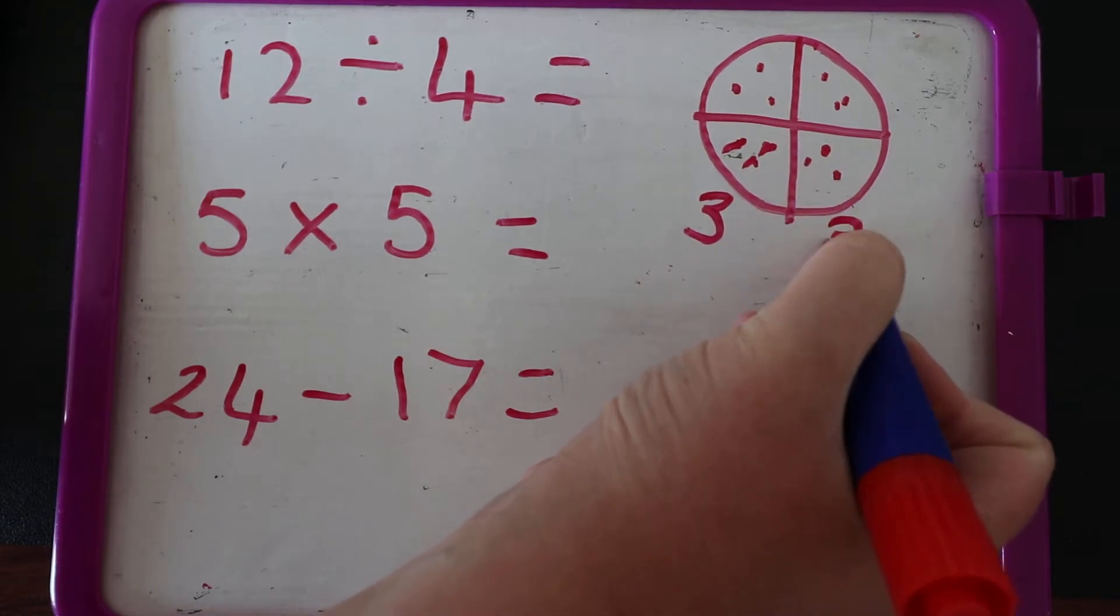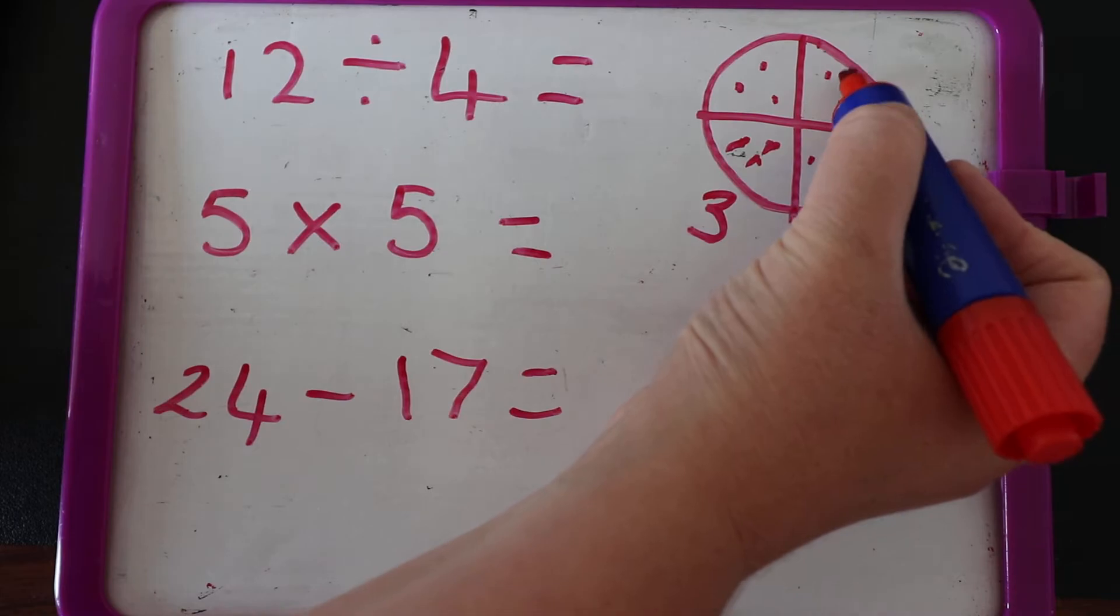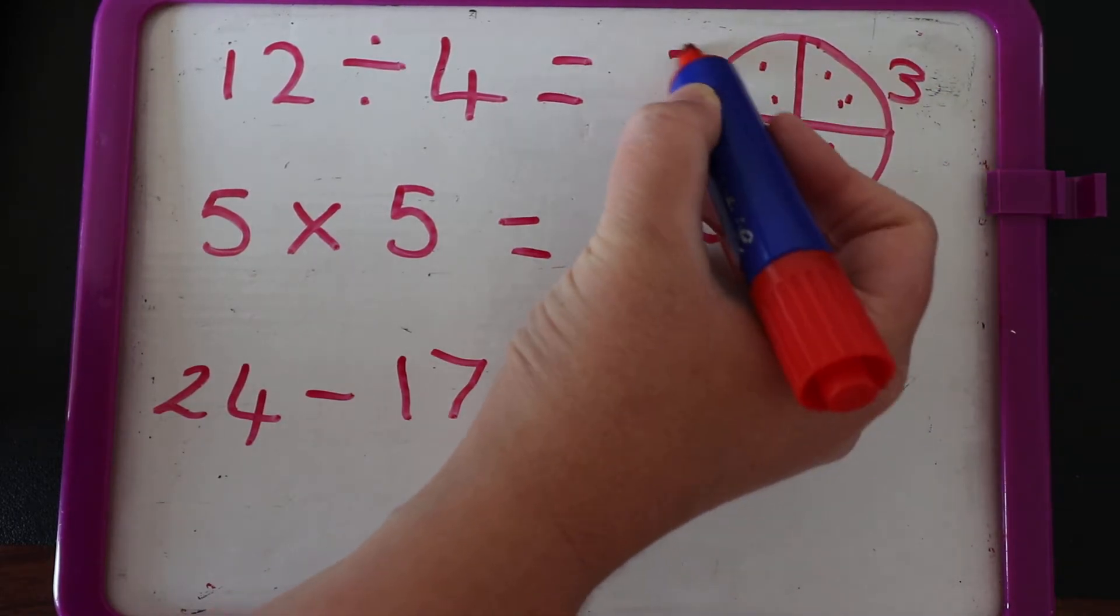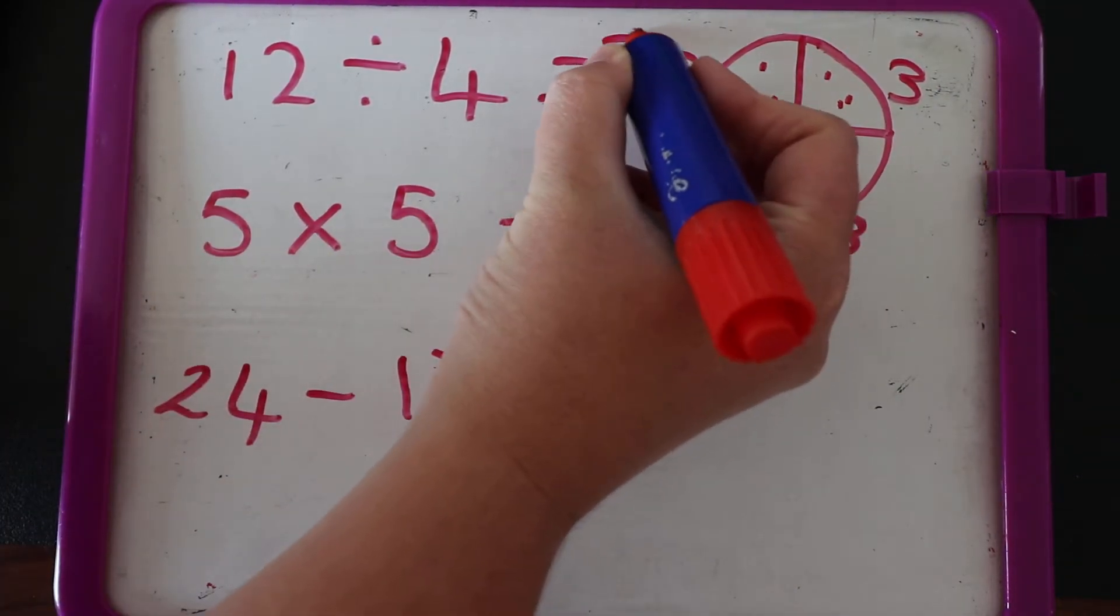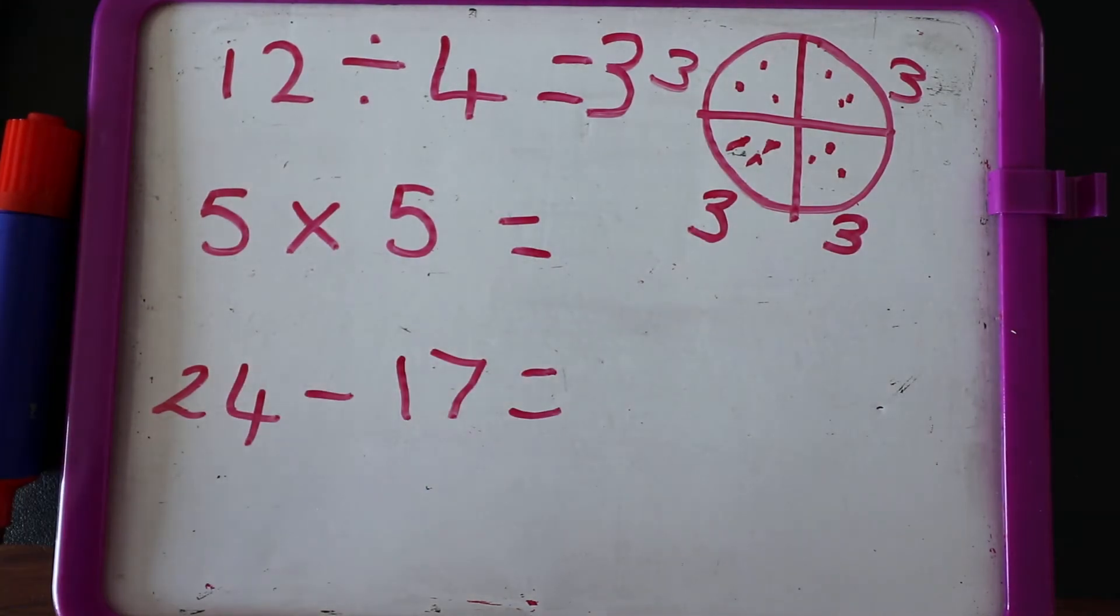One, two, and now I need to make sure I check each one because they've got to be equal, they've got to have the same in each group. One, two, three. One, two, three. I've got three in each group, so 12 shared by four is three. Well done if you got that right.